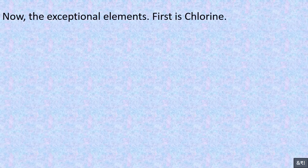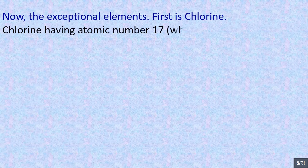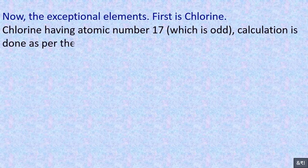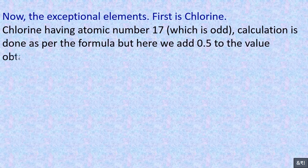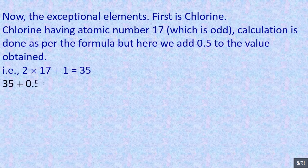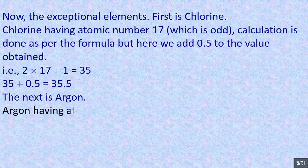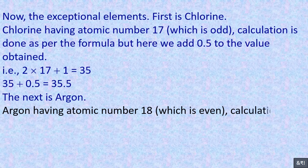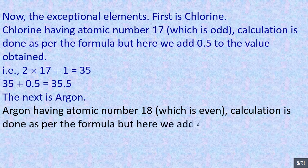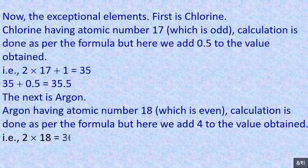Now the exceptional elements. First is chlorine. Chlorine has atomic number 17, which is odd — calculation is done as per the formula, but here we add 0.5 to the value obtained. That is, 2 multiplied by 17 plus 1 equals 35, and 35 plus 0.5 equals 35.5. The next is argon. Argon has atomic number 18, which is even — calculation is done as per the formula, but here we add 4 to the value obtained: 2 multiplied by 18 equals 36, and 36 plus 4 equals 40.